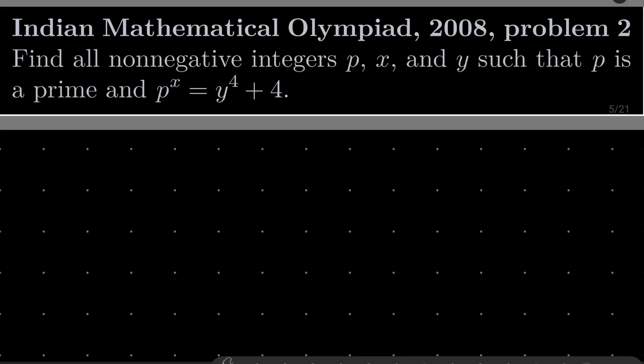Hello friends, in this video I'd like to solve the following problem from the Indian Mathematical Olympiad 2008, problem number 2. We wish to find all non-negative integers p, x and y, such that p is a prime and p^x = y^4 + 4.